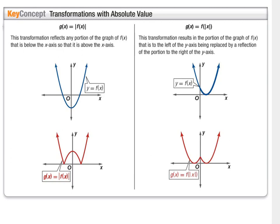Next are transformations with absolute value — you've probably never seen these before. When there's absolute value around the entire function, it takes any part that would have graphed below the x-axis and reflects it up. If inside the function there is an absolute value around the x, it takes whatever is on the right-hand side of the y-axis and reflects that across the y-axis.